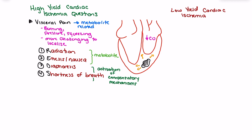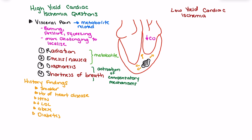We should pair symptom findings with history. History findings give us an index of risk for the patient. Core factors that increase risk for ischemia include: smoking, history of heart disease or prior heart attack, family history of heart disease, hypertension, high cholesterol, obesity or being overweight, and diabetes. The more of these risk factors a patient has, the higher their risk for atherosclerosis and cardiac ischemia. So when someone presents with those REDS symptoms and multiple risk factors, I would have a high index of suspicion for cardiac ischemia.